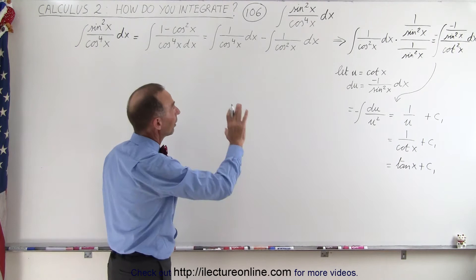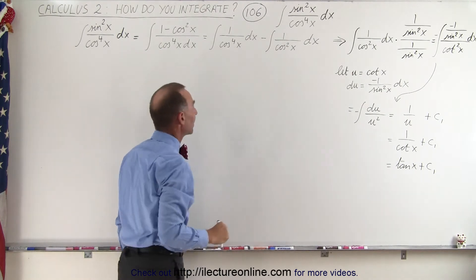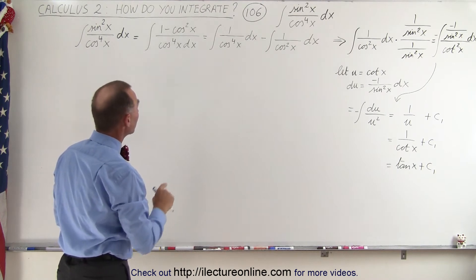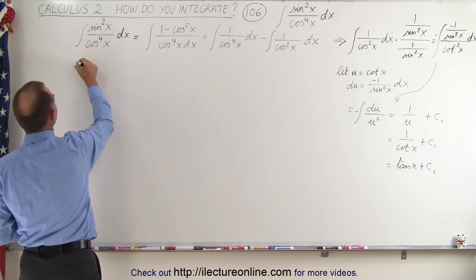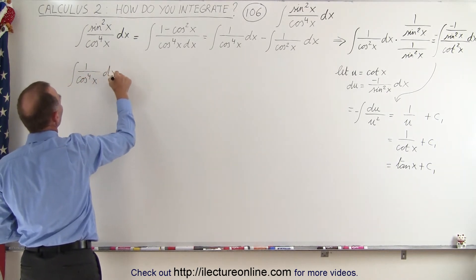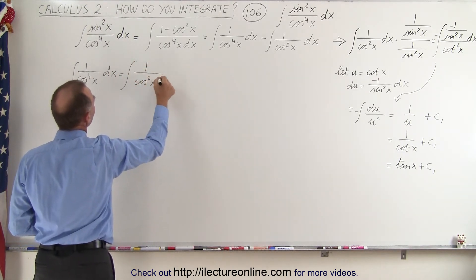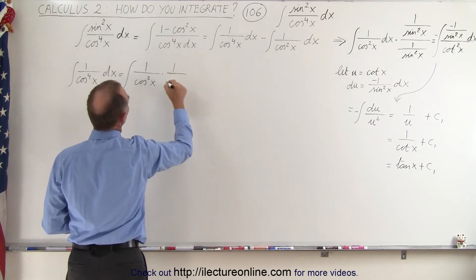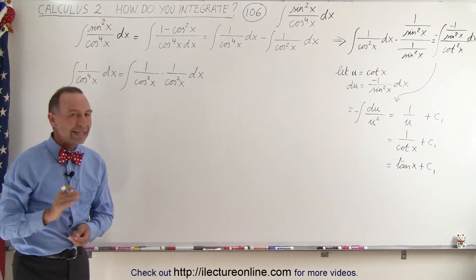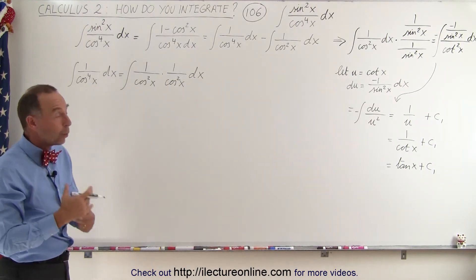Now we've taken care of the integral on the right, and we're going to be subtracting it from what we have on the left. Now the integral of 1 over cosine to the fourth power of x is a little bit more difficult. The integral of 1 over cosine to the fourth of x dx can be written as the product of 1 over cosine squared of x times 1 over cosine squared of x dx. The next step is kind of out of the ordinary — you would not think of doing that, but it's definitely one way to do it.